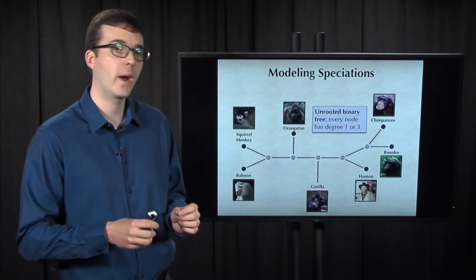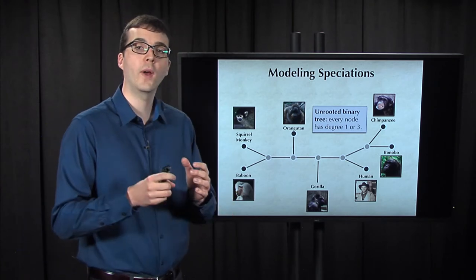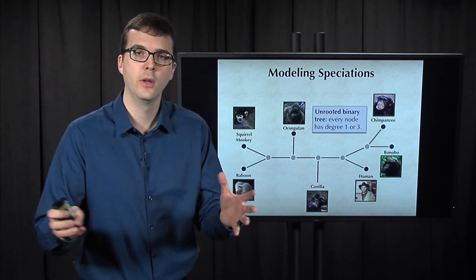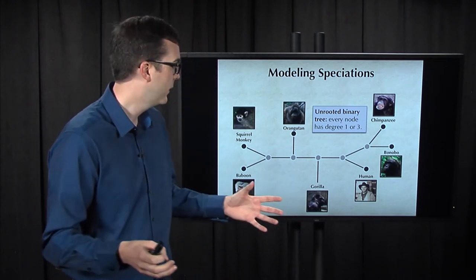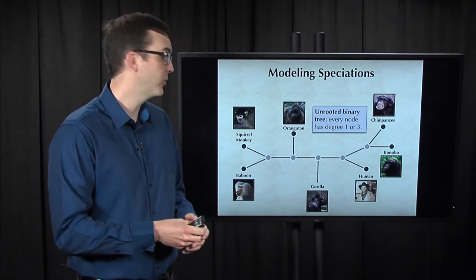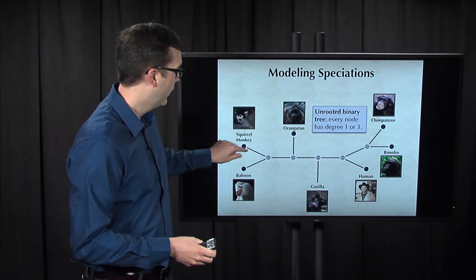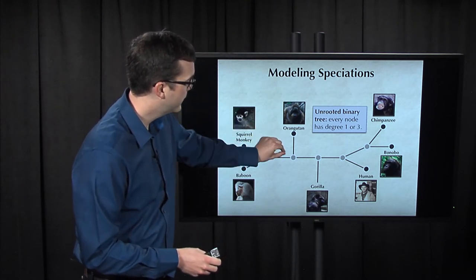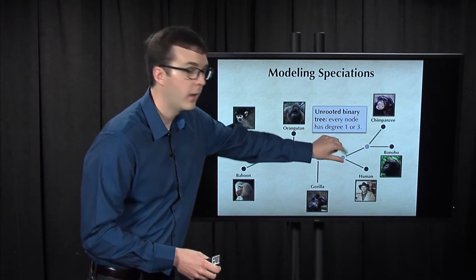This means that regardless of where the root is, when we progress from the root to a leaf, every time we encounter an internal node, the tree splits into two pieces. For example, if we place the root on the limb of the squirrel monkey here, then as we progress through the tree, it splits into two pieces, splits, splits, and so on.